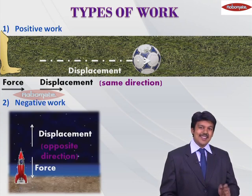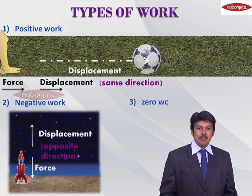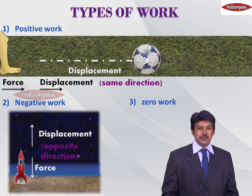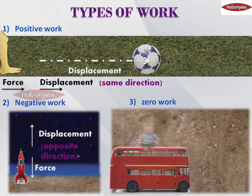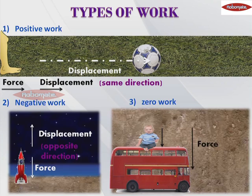The third type of work is called zero work. Consider a school bus with a small child sitting on it trying to apply force on the bus in the downward direction. By applying force downward, will the bus sink into the ground? Of course not — the school bus will move in the forward direction. So the displacement occurs in the horizontal direction while the force was applied in the vertical direction.